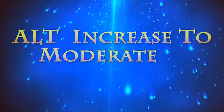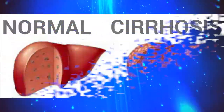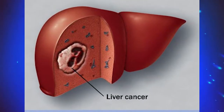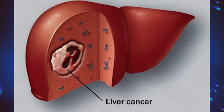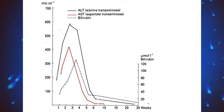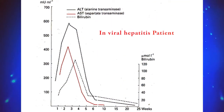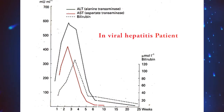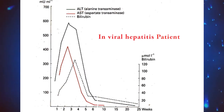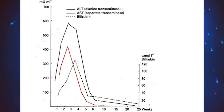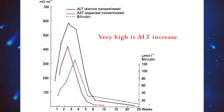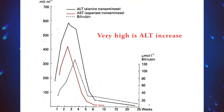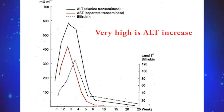Alanine Aminotransferase levels show moderate increases in disease conditions like cirrhosis and malignancy of the liver. As shown in this chart, viral hepatitis patients show increased Alanine Aminotransferase, AST, and bilirubin levels, with Alanine Aminotransferase being the most markedly elevated.